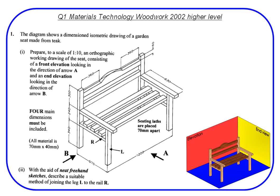The diagram shows a dimensioned isometric drawing of a garden seat made from teak. Prepare to a scale of 1 to 10 an orthographic working drawing of the seat, consisting of a front elevation looking in the direction of arrow A and an end elevation looking in the direction of arrow B. Four main dimensions must be included.